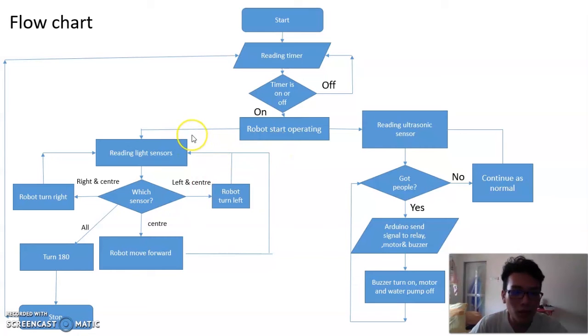Let's look at the left side, which is about the movement. It's about reading the three light sensors. If the right and center is dark, then you turn right. If the left and center is dark, then you turn left. If only center is dark, then you move forward. If all are dark, you turn 180 degrees and stop.